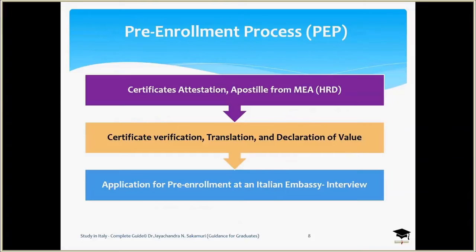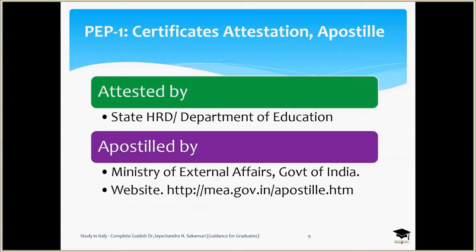Now let's go to the pre-enrollment process. There are mainly two steps before you actually submit the application for pre-enrollment at the Italian Embassy. The first step is to get your certificates attested and apostilled from the Ministry of External Affairs. The second step is that once the apostille is done, you can go for certificate verification at one of the Italian application centers such as VFS.